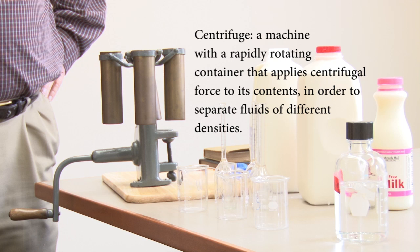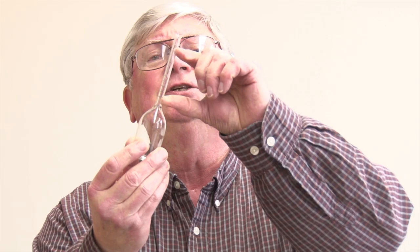This device that I have is a Babcock Centrifuge. He took advantage of the fact that fat floats to the top, and he developed a specific bottle for this purpose that has gradations so that when you look at the layer of fat that settles here, you can measure directly the amount of butterfat that was in the milk.